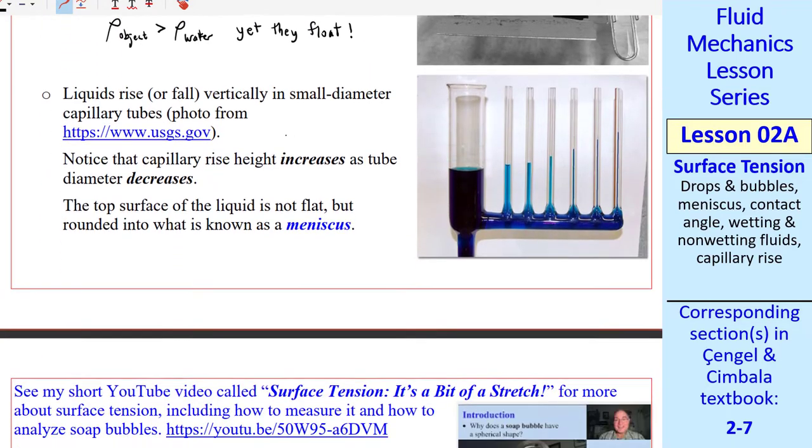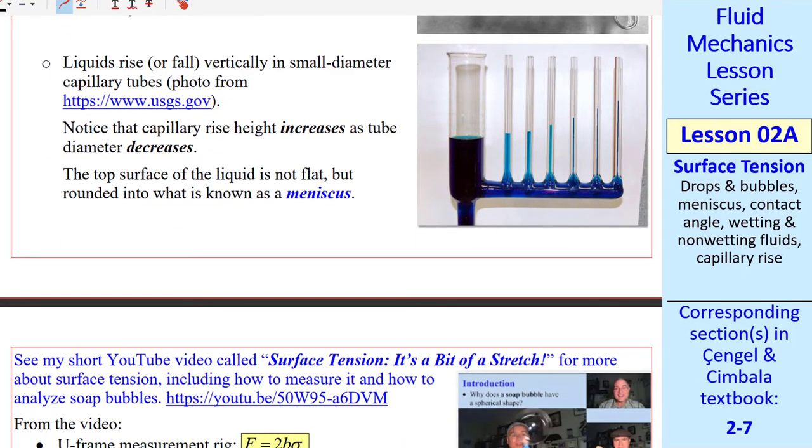Another consequence is that liquids rise, or can fall in some cases, vertically in small diameter capillary tubes. In this picture, the larger radius tubes are on the left, and the smaller radius tubes are on the right. This is just a reservoir of the dyed water. Notice the capillary rise height increases as the tube diameter decreases. We'll talk about this some more soon.